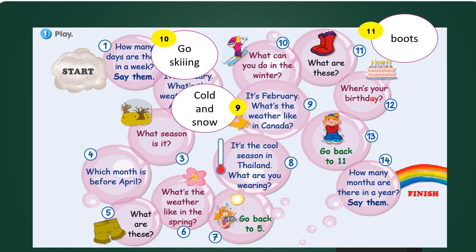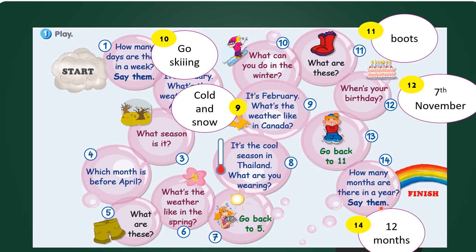Number twelve: when is your birthday? My birthday — the teacher's birthday — is on 7 November. How about yours? The last one is number fourteen: how many months are there in a year? Say them! They are January, February, March, April, May, June, July, August, September, October, November, and December. All together there are 12 months.